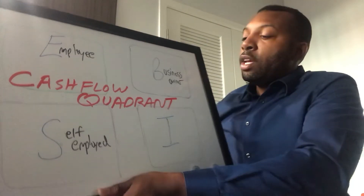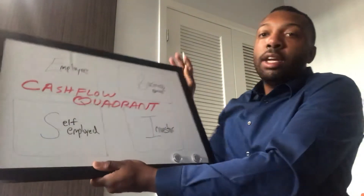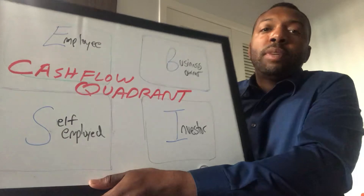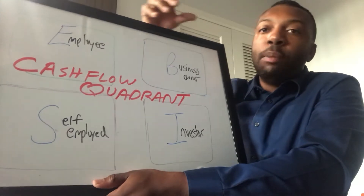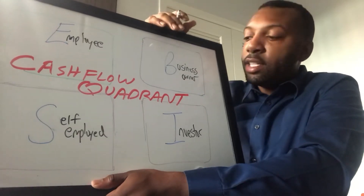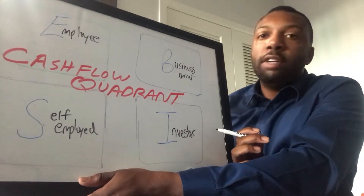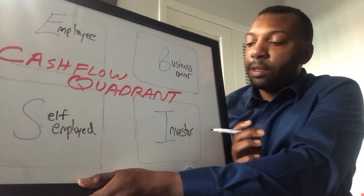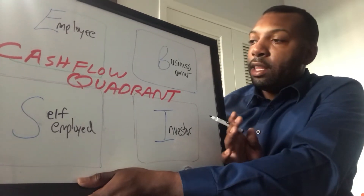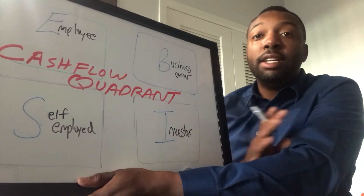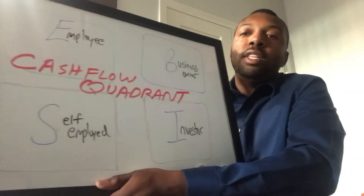The fourth quadrant is the investor. This is someone whose money is working for them. Maybe they've worked at a company for a long time or built a business, and now they've reached a point where they go out and pursue different ventures and opportunities. Their active efforts are long past — the money is simply being invested in different opportunities and working for them.